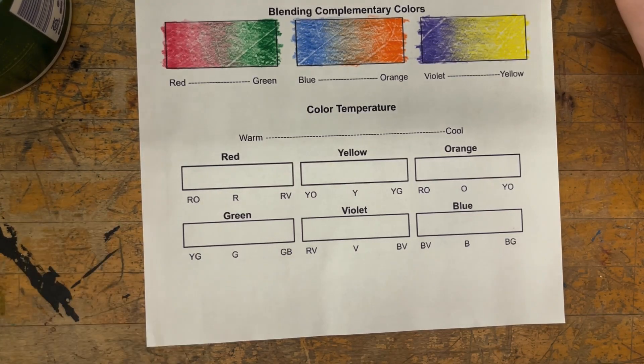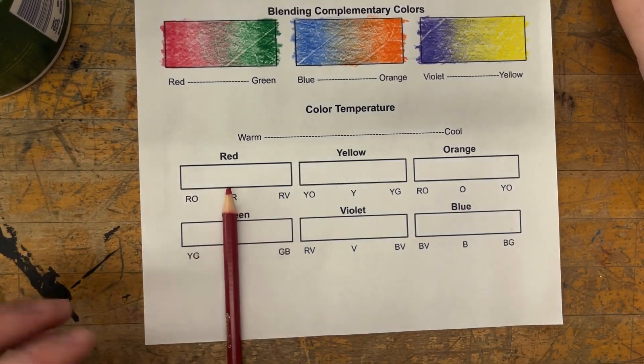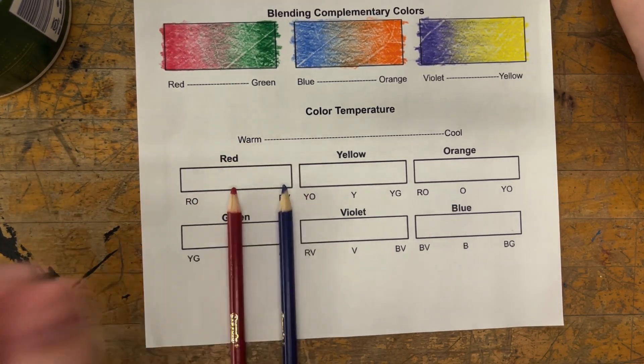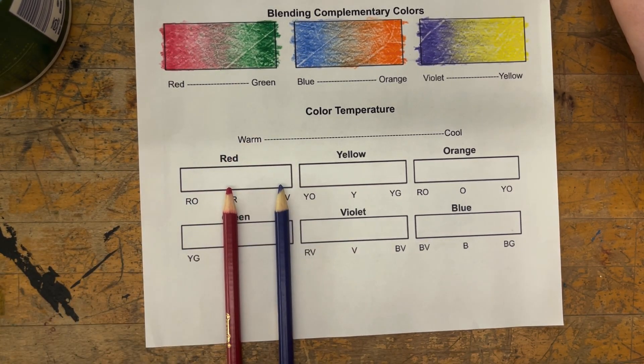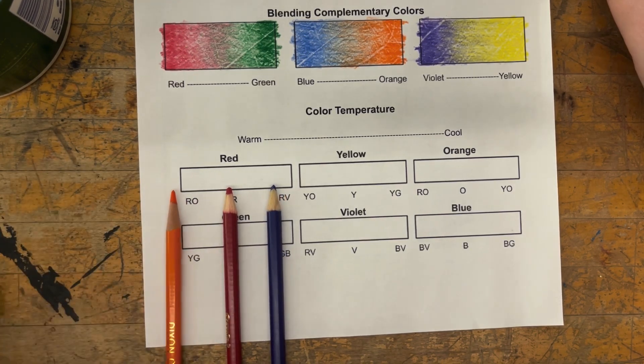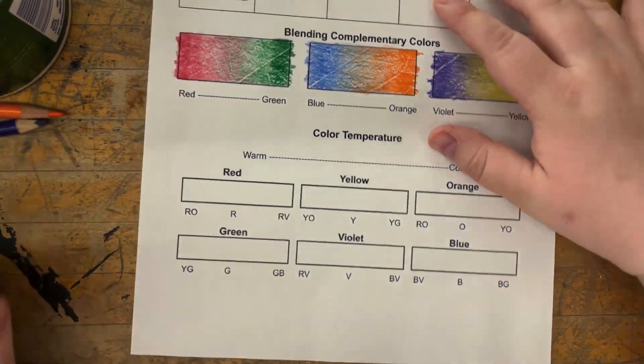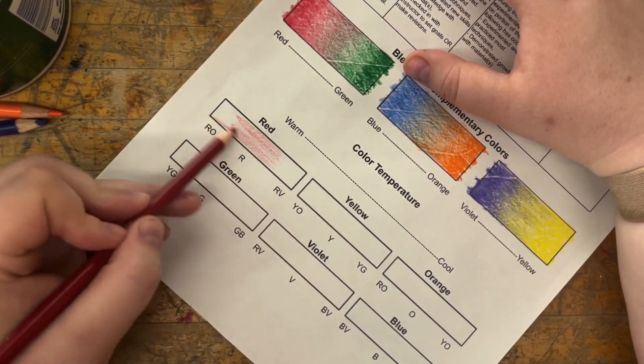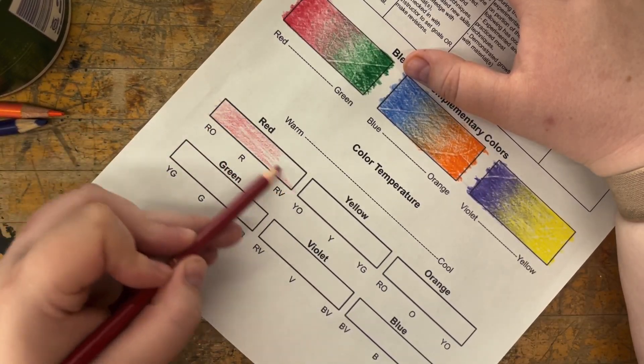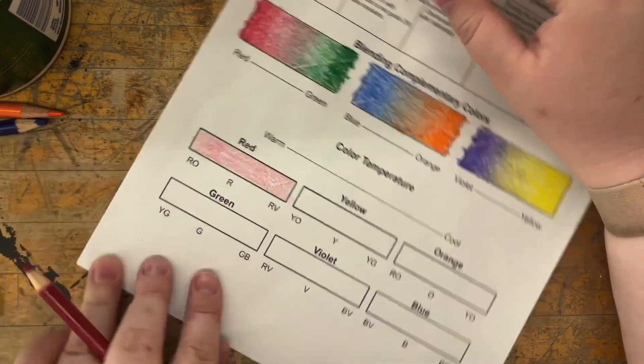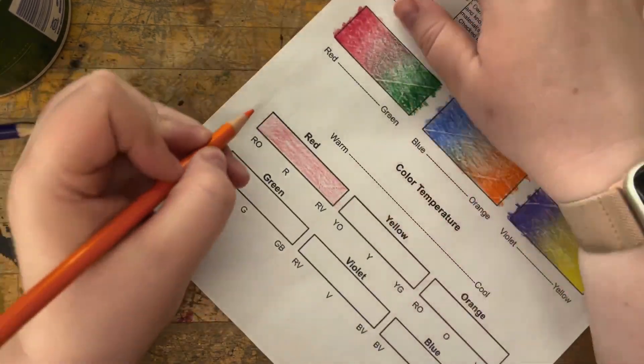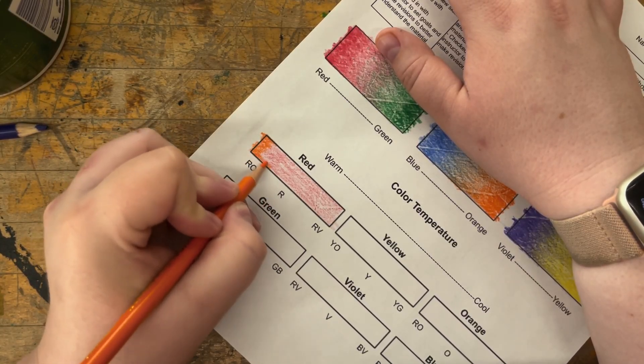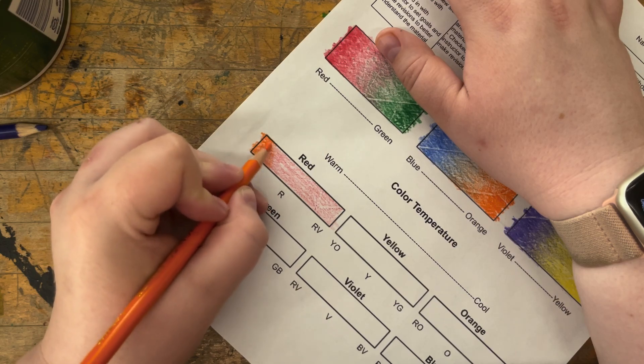The next section is going to be looking at color temperature. This is looking a little bit more specifically at individual colors and thinking on the temperature, so how warm and how cool the color is. For red, I'm going to be looking at that base tone of red, and then I'm also going to look at where it starts to go to more orange when you're looking at that red-orange shade, and then red-violet where it starts to get more cool.